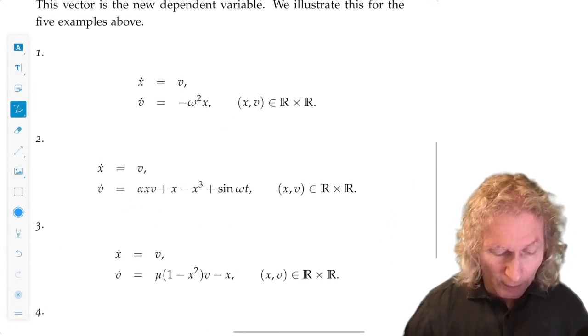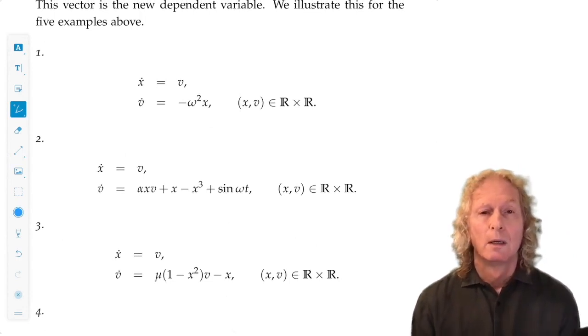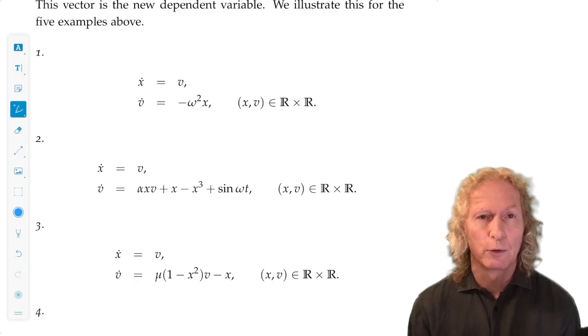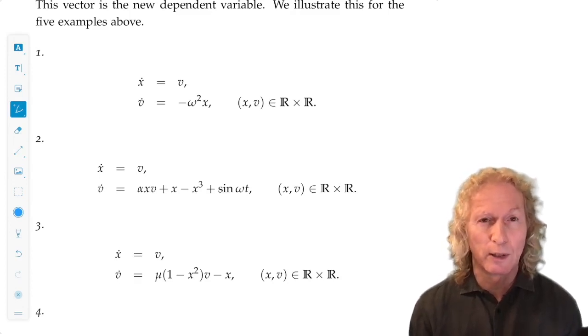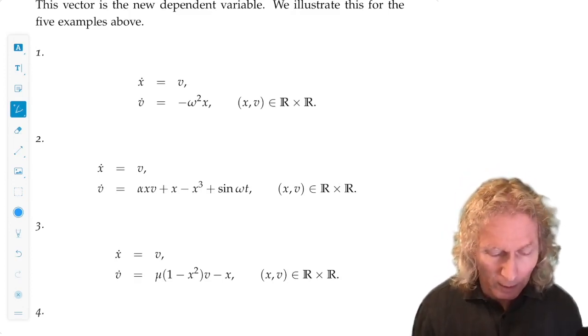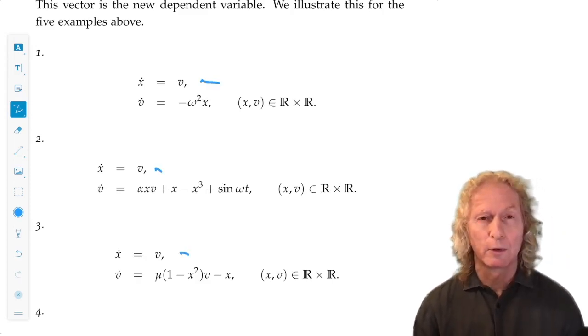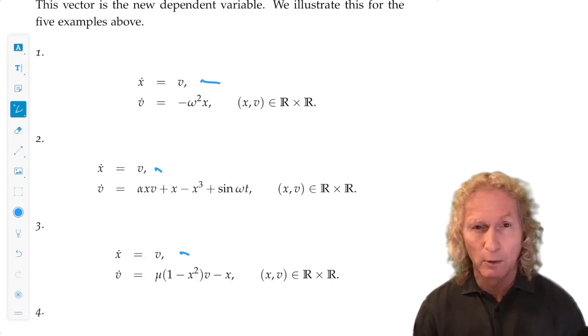So the first three are second order. The derivative below the highest order, the first derivative, x dot equals v. We've done that for the first three. Moved everything else to the right hand side that wasn't there already.